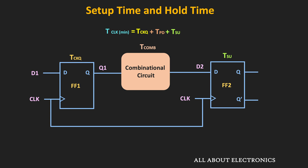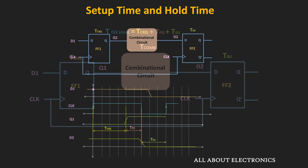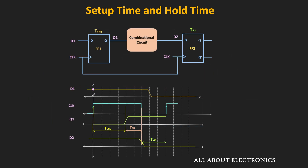Let us briefly understand this with a timing diagram. At the clock edge, the D1 input will be sampled and will be available at the output after a delay of TCKQ. This output is applied to the combinational circuit, and the output of the combinational circuit will be available after a delay of TCOM. That means the new valid D2 input will be available after a total delay of TCKQ plus TCOM.